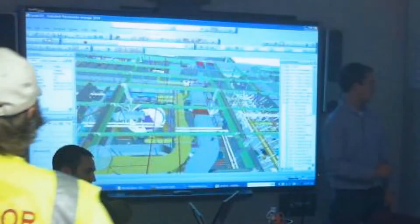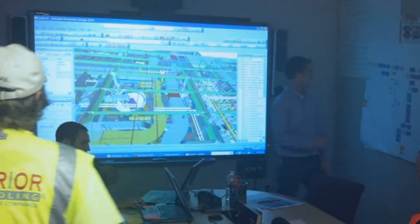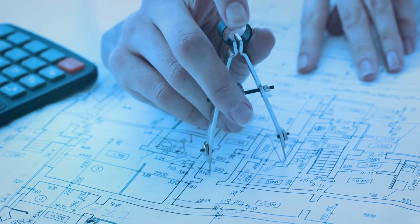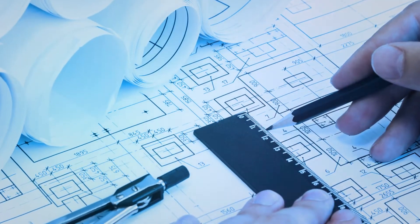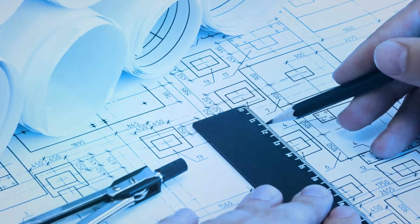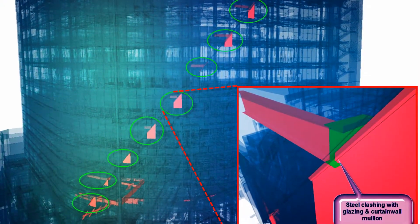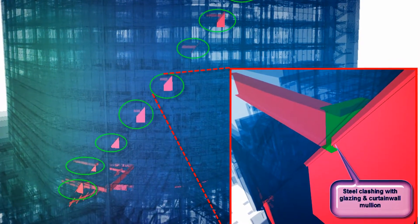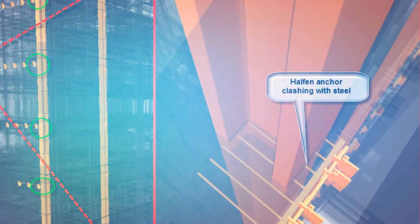Previously, drawings were reviewed and coordinated in a two-dimensional environment based off of printed drawings. Information would then need to be layered and manually verified, whereas now, identifying conflicts between systems is almost instantaneous. By reviewing the designed systems in a virtual model, we can immediately propose alternative solutions to uncoordinated designs.